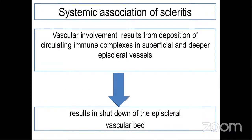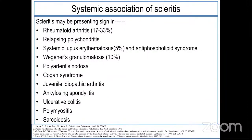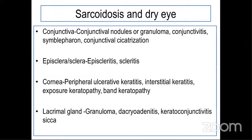The association of scleritis with systemic disease involves the vessels, resulting in deposition of circulating immune complexes in the superficial and deeper episcleral vessels, which ultimately results in shutdown of the episcleral vascular bed, resulting in sloughing, necrosis, and complications. In systemic association risk, there are a plethora of diseases starting from rheumatoid arthritis to sarcoidosis, and most of these diseases are primarily associated with dry eye. Sarcoidosis can affect literally any system involving the eye — from conjunctiva to episclera to cornea to the lacrimal glands — leading to dry eye disease.